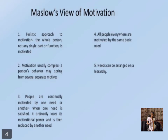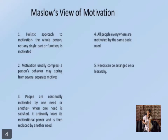Maslow's theory of personality rests on several basic assumptions regarding motivation. First, Maslow 1970 adopted a holistic approach to motivation — that is, the whole person, not any single part or function, is motivated. Second, motivation is usually complex, meaning that a person's behavior may spring from several separate motives. For example, the desire for sexual union may be motivated not only by a genital need, but also by needs for dominance, companionship, love, and self-esteem. Moreover, the motivation for a behavior may be unconscious or unknown to the person. For example, the motivation for a college student to make a high grade may mask the need for dominance or power.